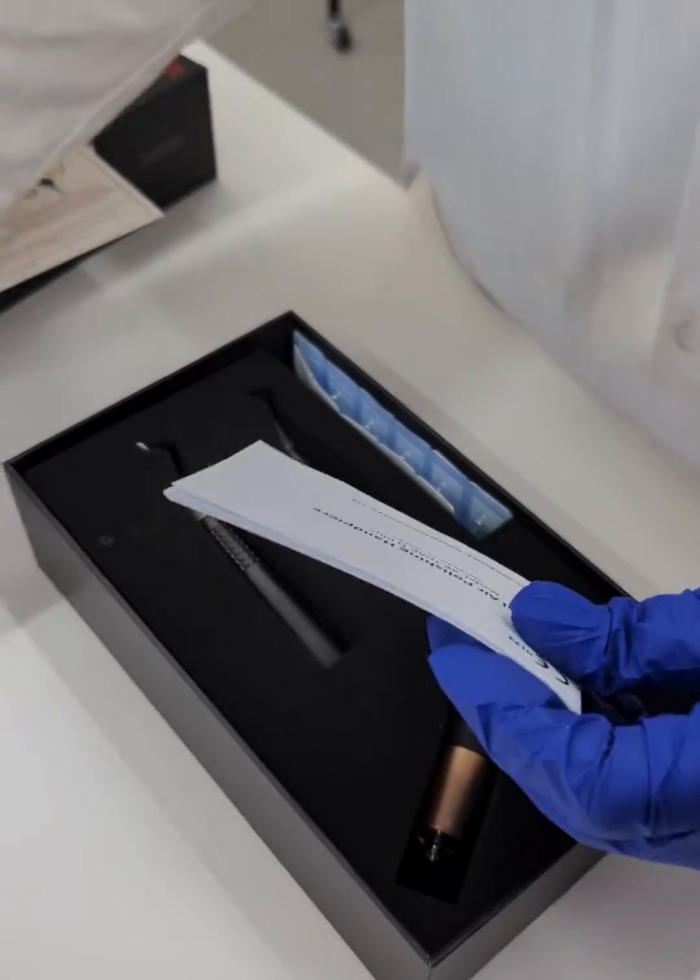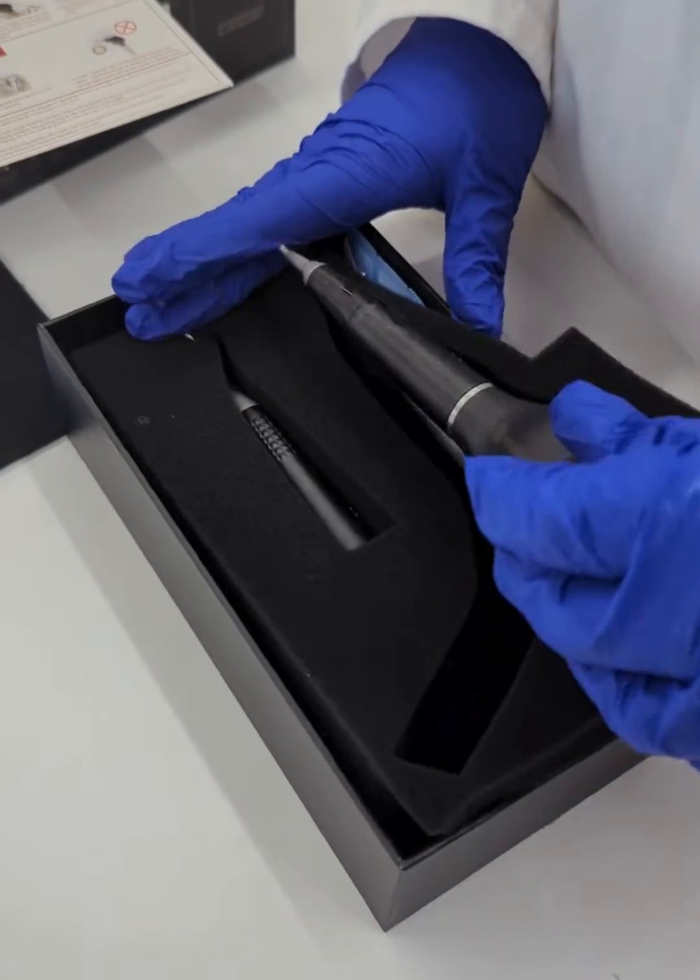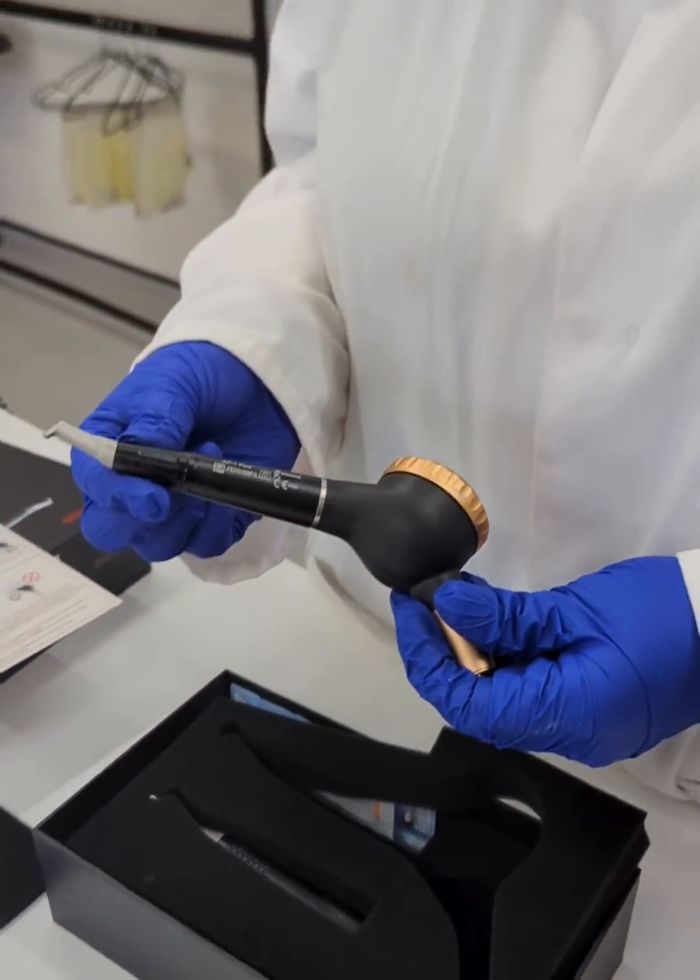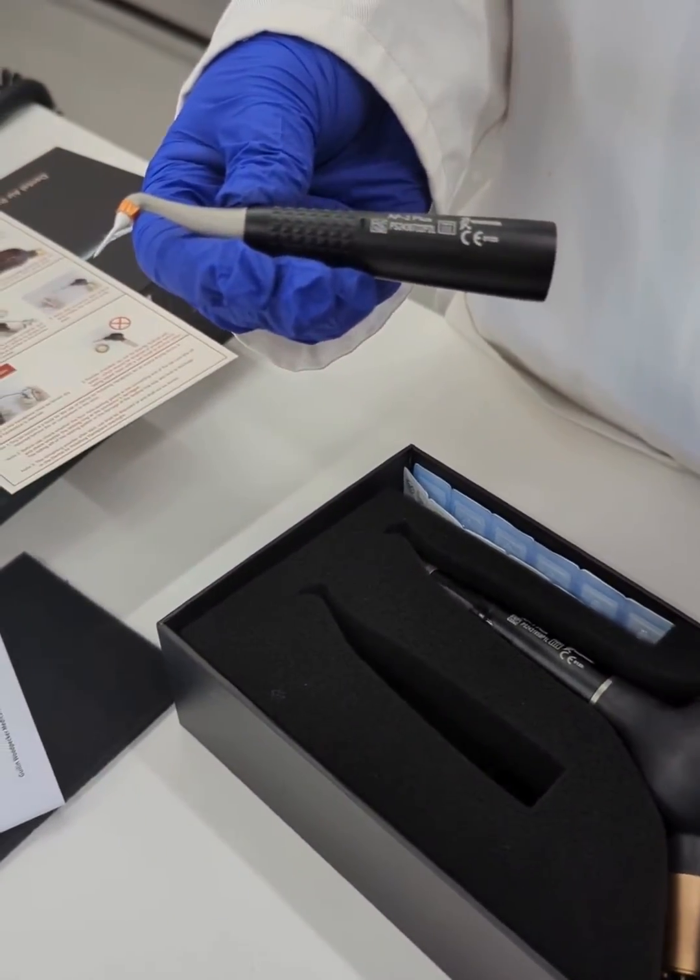Underneath that, you will have the instructions and also it will show you the handpiece. Now you get the handpiece with a prophy tip and you also get the sub-gingival perio tip as well. So it's two in one.